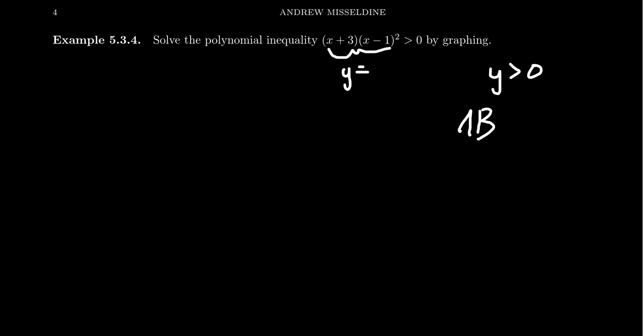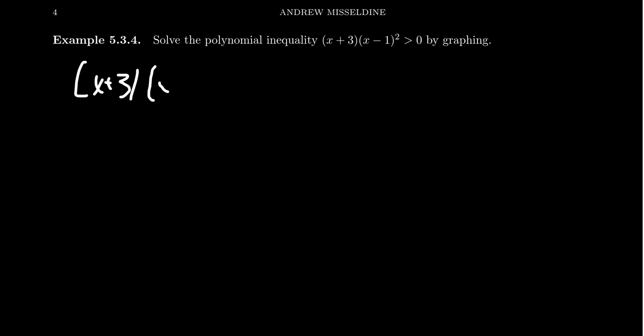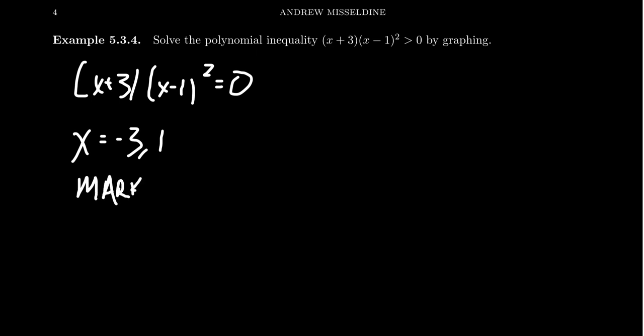So this is going to be our plan of attack. When you have a polynomial inequality, you're going to first solve the equation. Take (x + 3)(x - 1)² = 0. We want to solve the equation — that's already factored, so that's great. We can see that the x-intercepts are negative three and one. Once we have it solved, we have these markers. Now these markers are not the solutions to the inequality, but they do help us with the graph substantially.